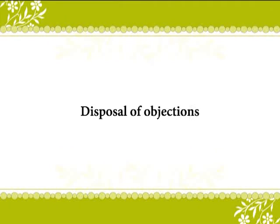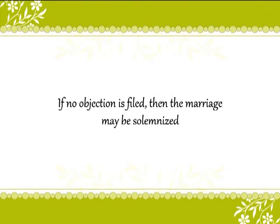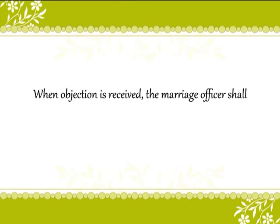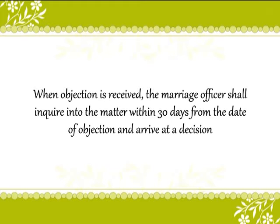For disposal of objections, the marriage officer shall wait up to 30 days from the date of publication of notice. There are two possibilities: first, if no objection is filed, the marriage may be solemnized. Second, when an objection is received, the marriage officer shall inquire into the matter within 30 days from the date of objection and arrive at a decision. If the objection comes out to be unreasonable, vague, and prima facie untenable, the marriage officer will proceed to solemnize the marriage.